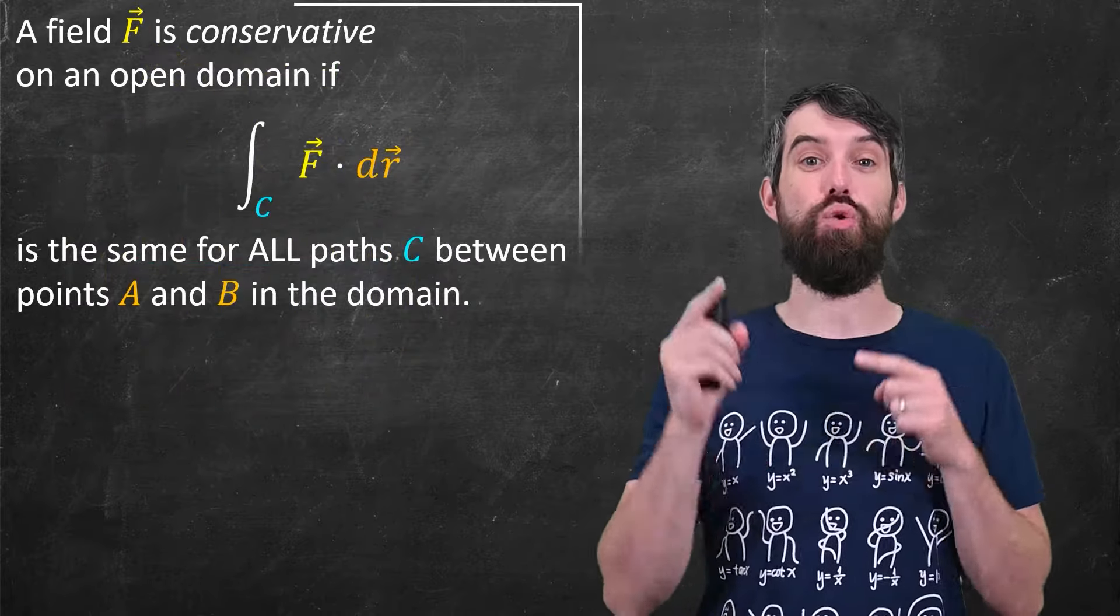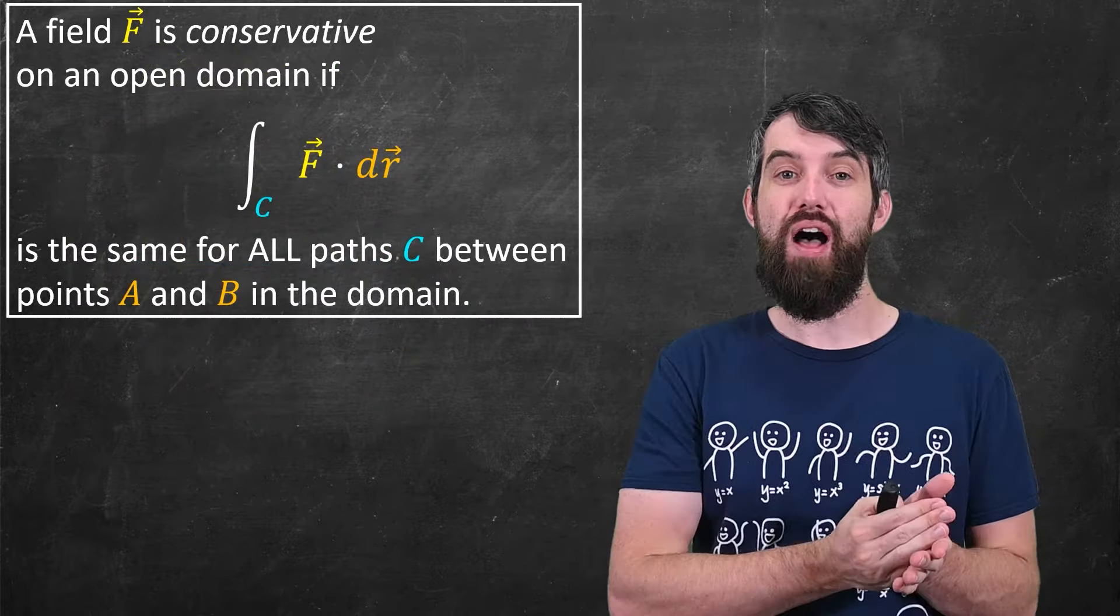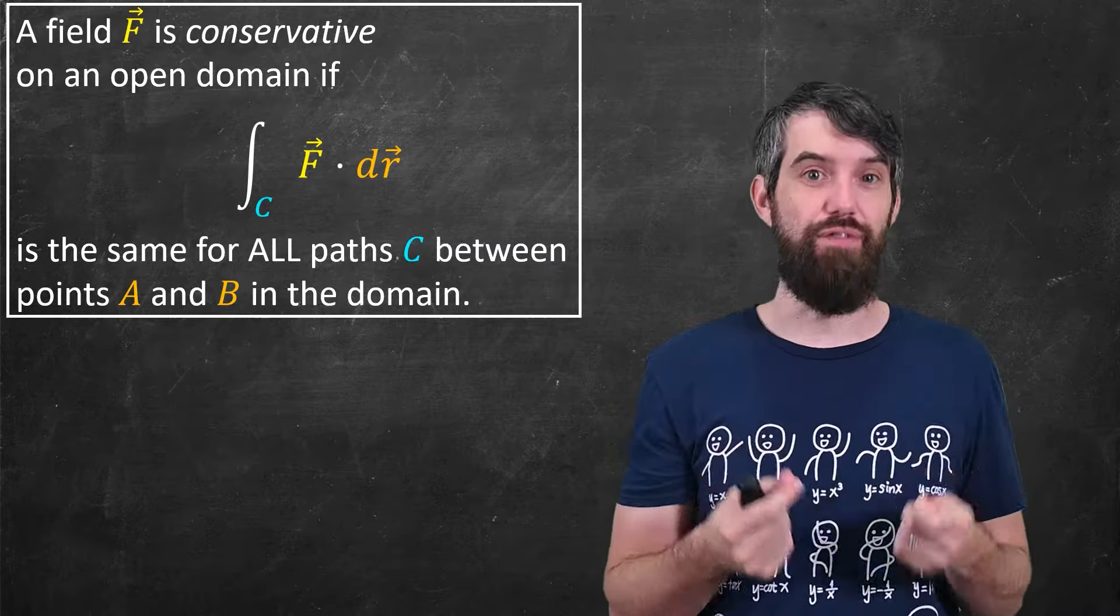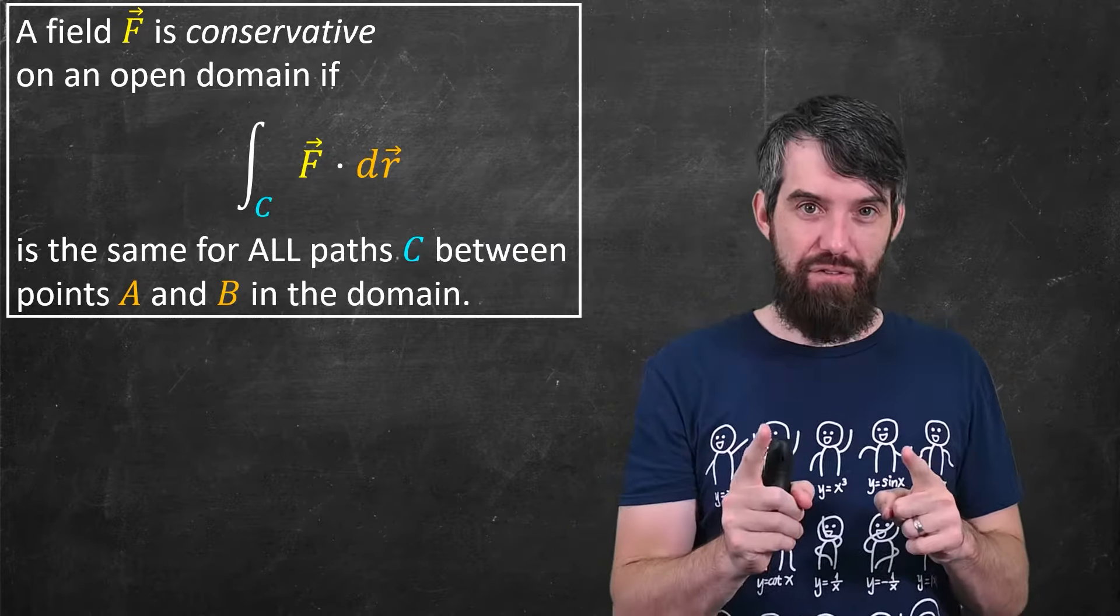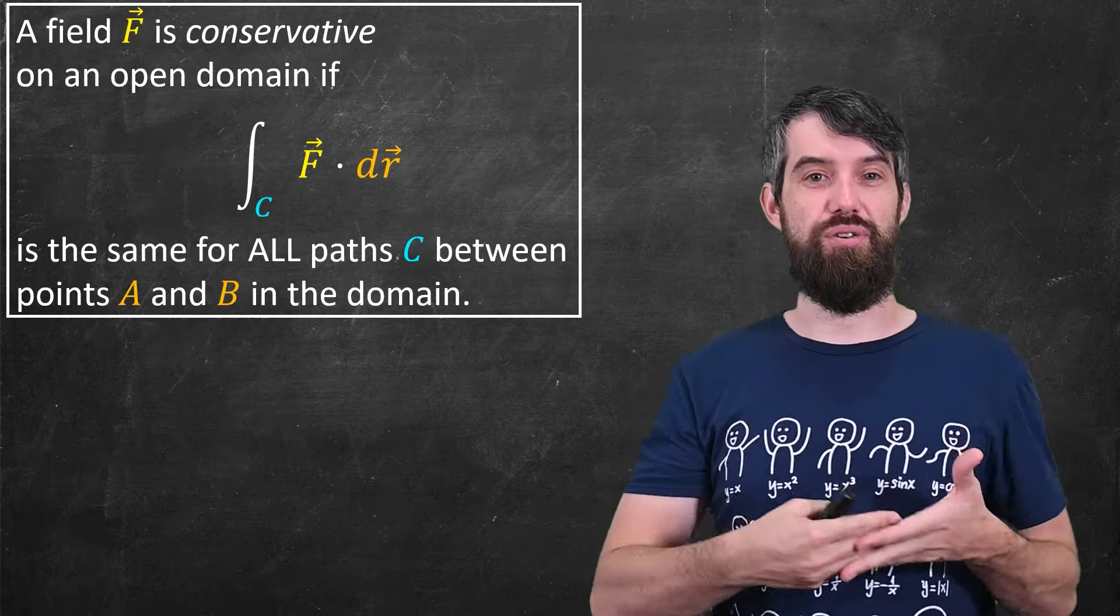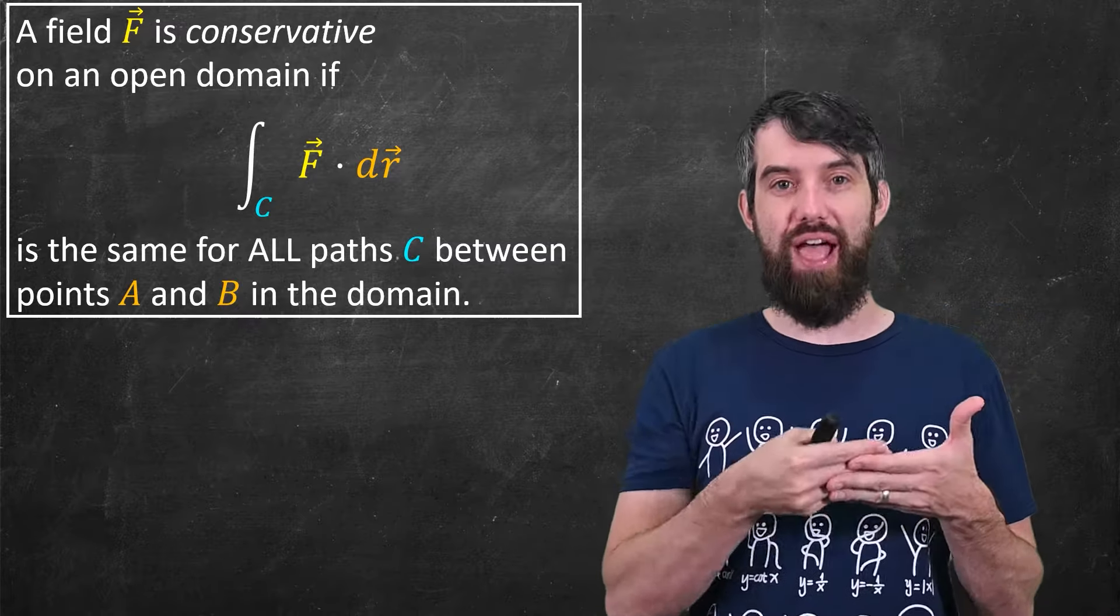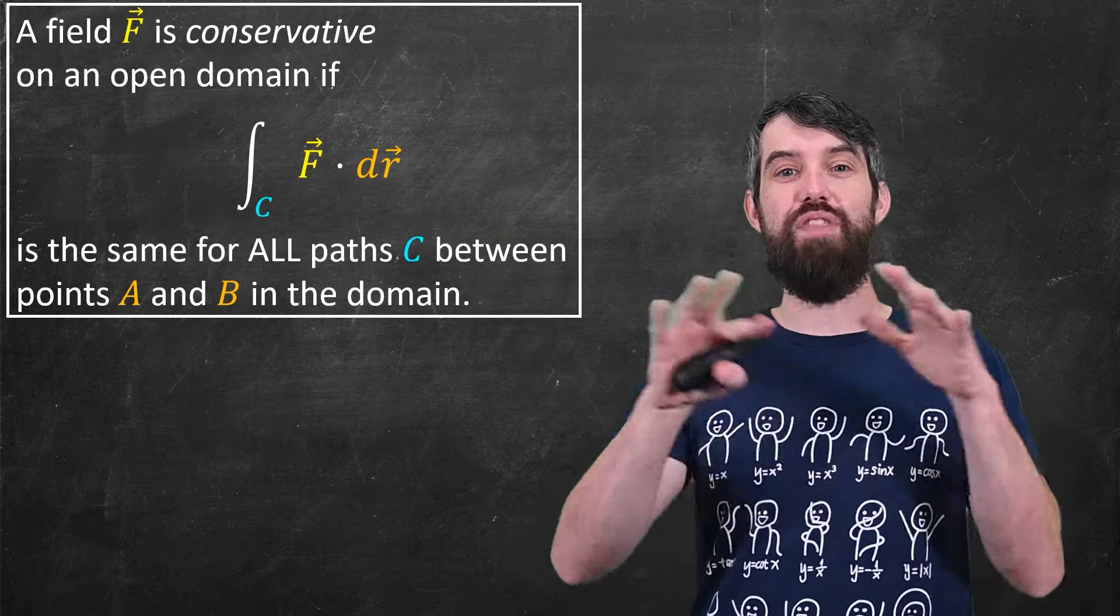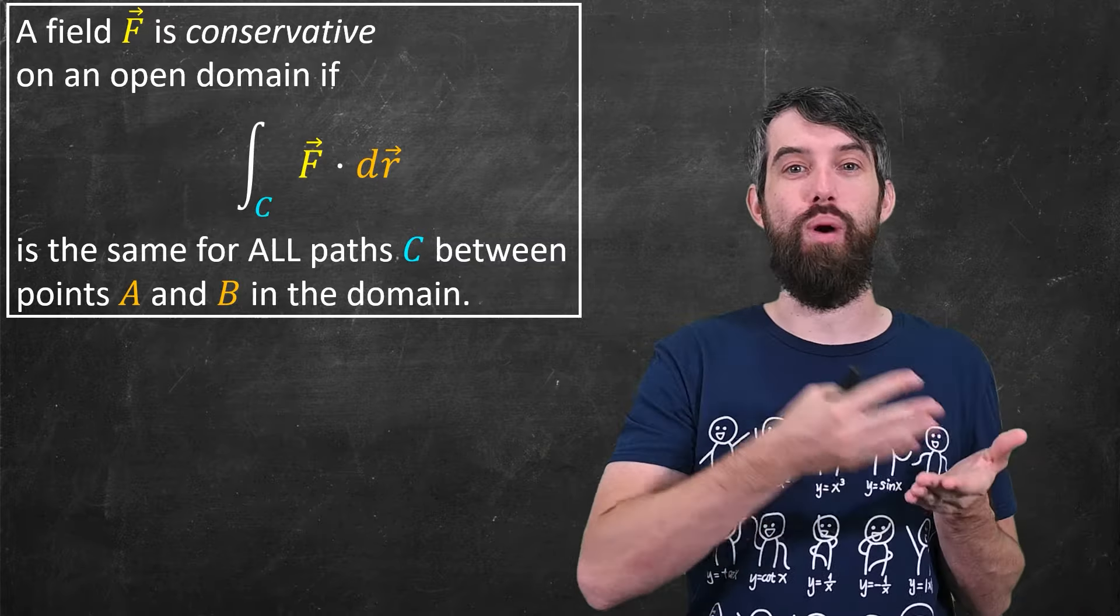So, here's our actual definition. We are going to define whether a field is conservative, and the definition is that it is conservative on an open region if the line integral along the curve c of f dot dr is the same regardless of the path that you take between two points a and b.